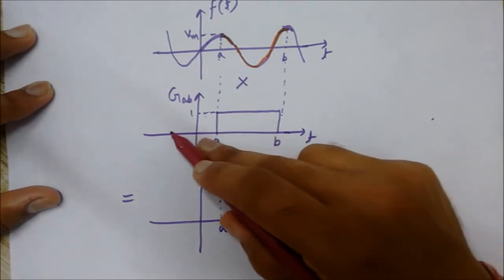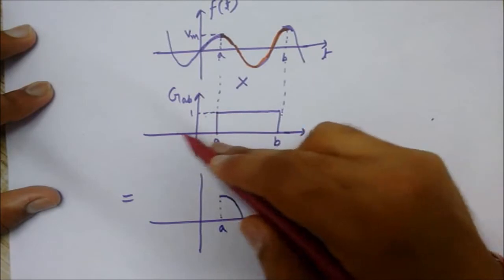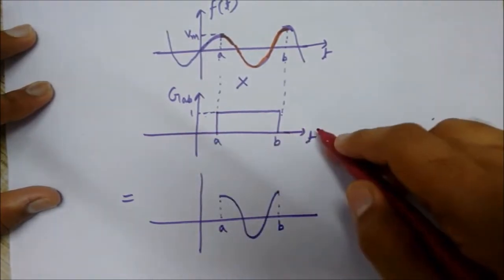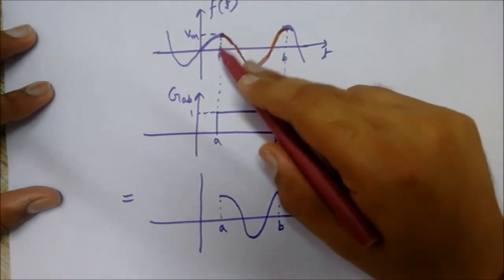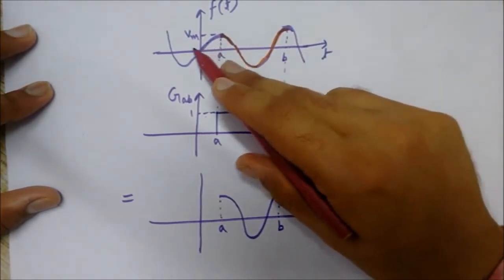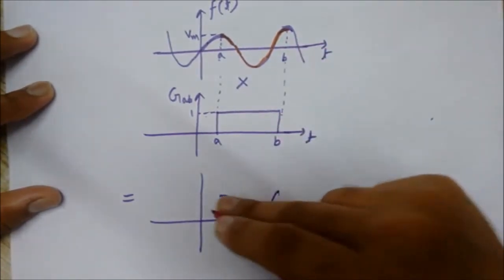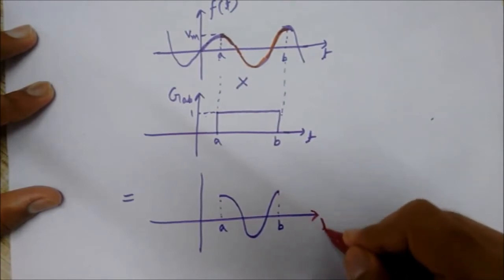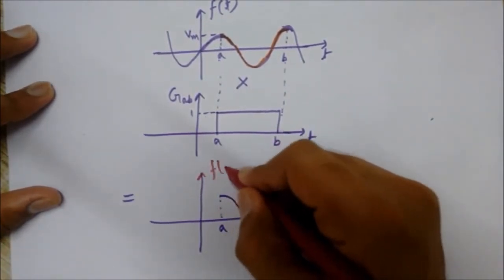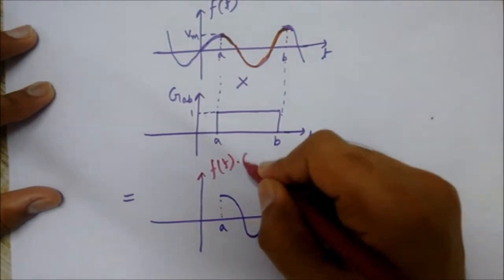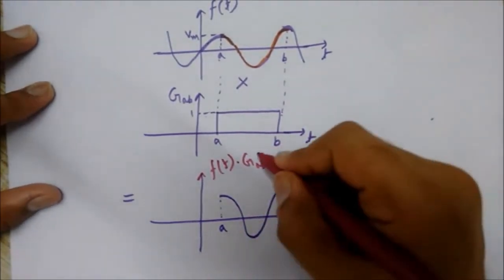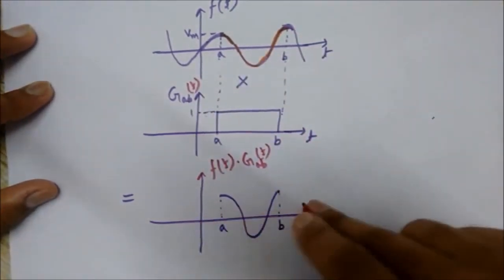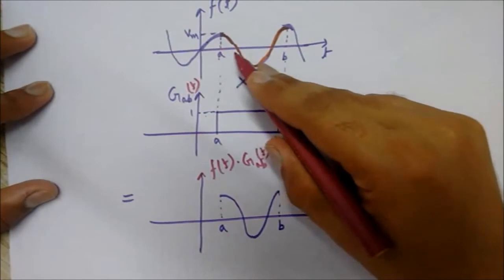...since the gate signal is 0 for all the values less than a and greater than b, for this signal also the values which are less than a and greater than b, the resultant signal - this is f(t) into G_ab(t) - is 0 in this interval. But in the interval a-b...